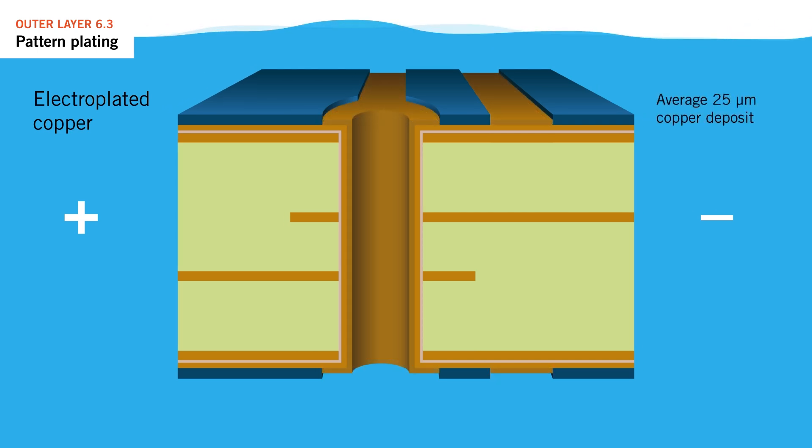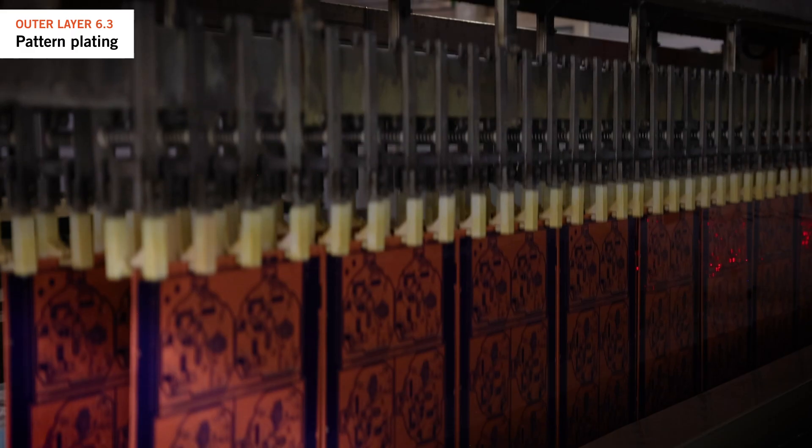Ensuring the final plating thickness meets either NCAB's requirement of an average 25 microns through hole or aligns with the customer's surface thickness preferences should they have a specification beyond the NCAB requirement.